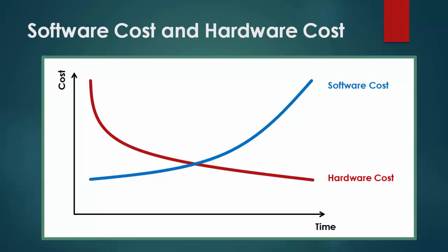So those days, developing hardware with high processing power, less physical space, and high storage capacity at lower cost was the main focus rather than developing software. In this graph, the sudden drop at the beginning of the hardware curve depicts that they achieved it.